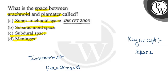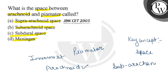So the space between arachnoid and pia mater is known as subarachnoid space, which is filled with cerebrospinal fluid. The right answer to our question will be option B. I hope you understand it well. Best of luck.